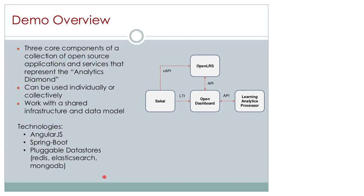We've worked hard to make these projects play nicely together — they have a shared infrastructure, so all applications within the suite can support the same database, and they have a shared data model to make integration easy. These are all Java web applications. OpenLRS and OpenDashboard use the Spring Boot framework. For applications with a UI component, we've chosen AngularJS and Bootstrap 3 as front-end technologies. On the back-end, we've tried to make it easy to plug in different data stores — currently we have support for Redis, Elasticsearch, and MongoDB across the different applications.